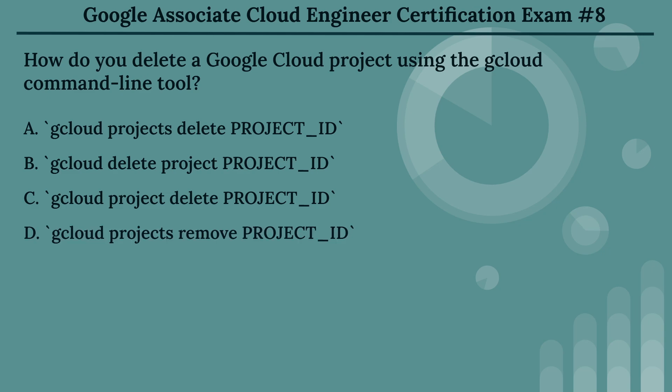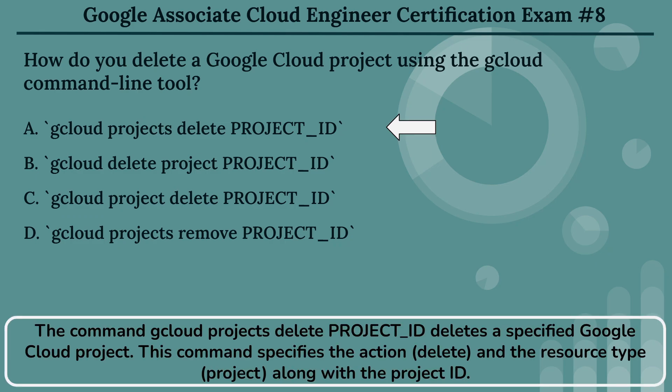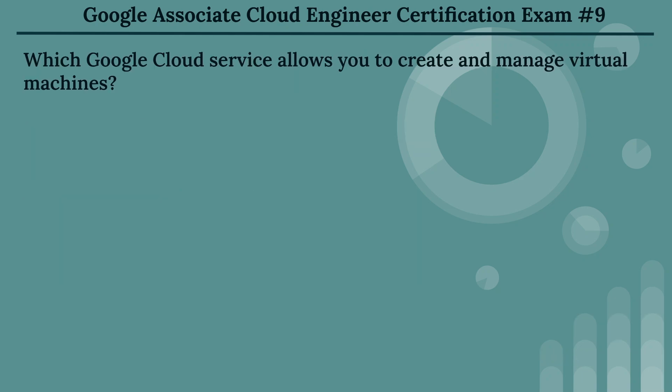The right answer is Option A: gcloud projects delete PROJECT_ID. The command gcloud projects delete PROJECT_ID deletes a specified Google Cloud project. This command specifies the action, delete, and the resource type, project, along with the project ID.